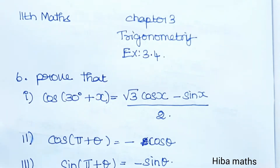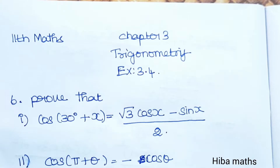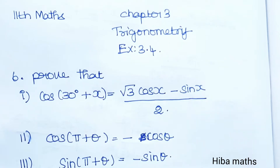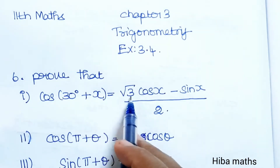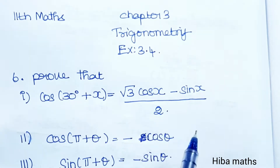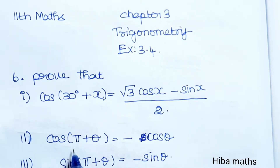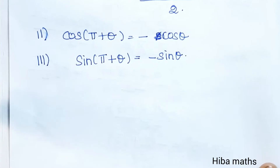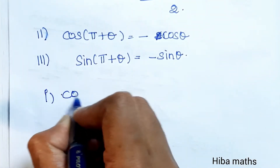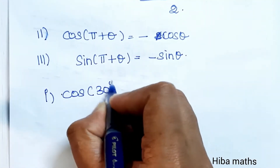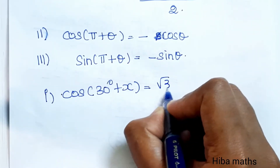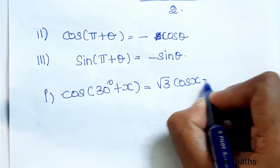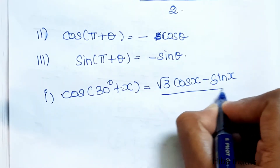Hello students, welcome to Hibamax 11th standard maths, Chapter 3 Trigonometry, Exercise 3.4, 6th question. We will prove: first, cos(30° + x) = (√3 cos x − sin x) / 2; second, cos(π + θ) = −cos θ; third, sin(π + θ) = −sin θ.